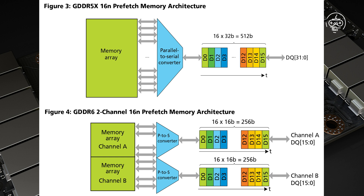HBM2 Memory. HBM, High Bandwidth Memory, is a collaborative attempt by Samsung and Hynix. It's found on top-notch graphics cards and other sophisticated graphics processors. High-speed serial memory interfaces are common applications. Its popularity stems from the fact that it offers a large memory range while consuming relatively little power.